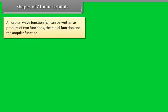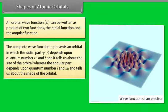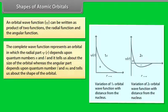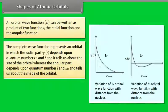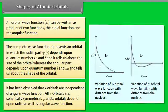The orbital wave function Xi can be written as a product of two functions: the radial function and the angular function. The radial part depends upon quantum numbers n and l and tells us about the size of the orbital, whereas the angular part depends upon quantum numbers l and ml and tells us about the shape of the orbital. The positive and negative signs indicate that the orbital wave function is positive or negative in a particular region. It has been observed that s orbitals are independent of the angular wave function — all s orbitals are spherically symmetrical. P and d orbitals depend upon both the radial and angular wave functions.